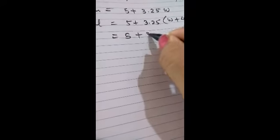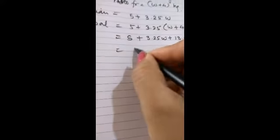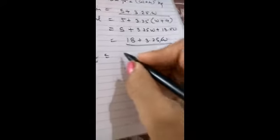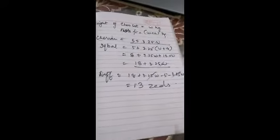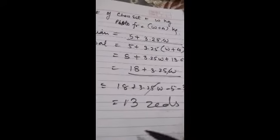So this we will solve. So this gets multiplied, 3.25 into W plus this will multiply and we will get 13.00. So this becomes 18 plus 3.25W. So now the difference between what Charian pays and what Iqbal pays, the difference we can see that this and this will get cancelled when you subtract them. 18 plus 3.25W minus 5 minus 3.25W. So this gets cancelled and 18 minus 5 will be equal to 13 zeds. So this will be the answer, 13 zeds.